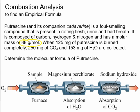We're told that a 125 milligram sample of putrescine was burned completely — that's why it's called combustion analysis — and 250 milligrams of carbon dioxide and 153 milligrams of water vapor were collected. From that information, we're supposed to find the molecular formula of putrescine.